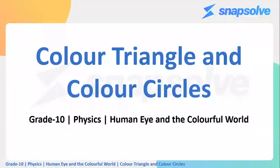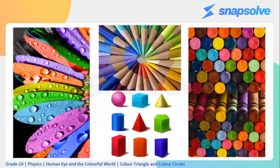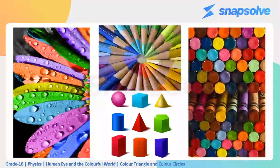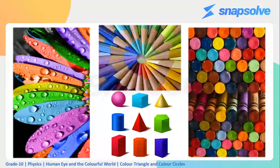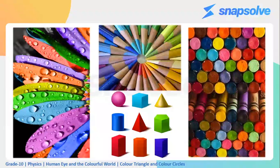Hello friends. In this video, we will study color triangles and color circles. There are so many colors in the universe — as you can see on our screen, colors such as magenta, blue, green, yellow, orange, red, and so on. The key point is that all colors are obtained by combining only three colors, in different combinations. These three colors are called primary colors.